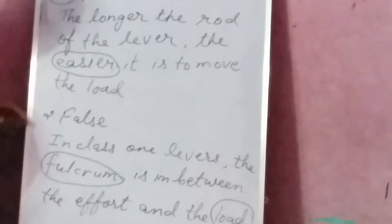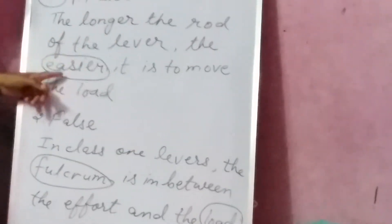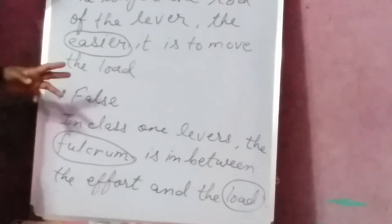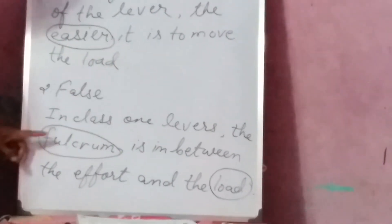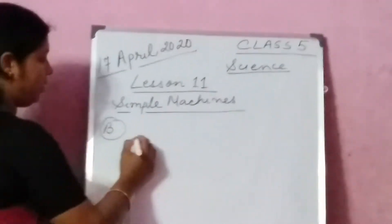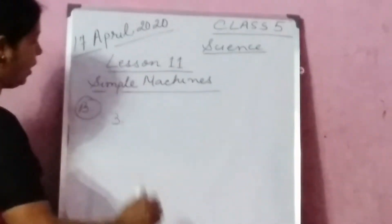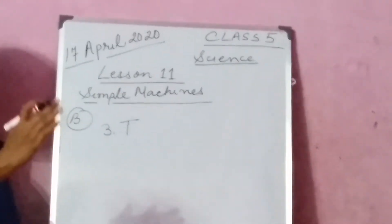Please see once again. Number 1 is false: the longer the rod of the lever, the easier it is to move the load. Number 2 is also false: in class 1 levers, the fulcrum is in between the effort and the load. Number 3: in class 3 levers, the effort is in between the fulcrum and the load. This is true.